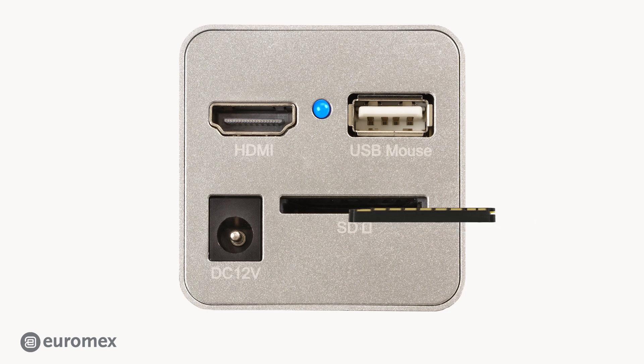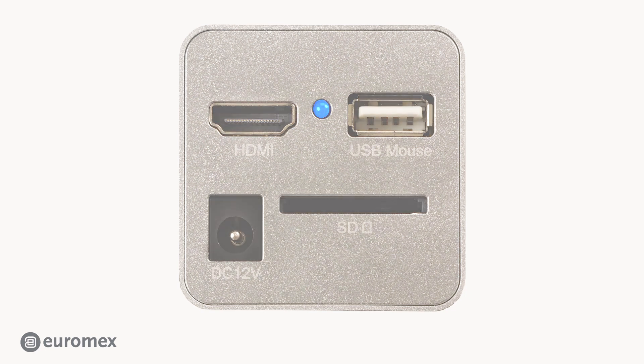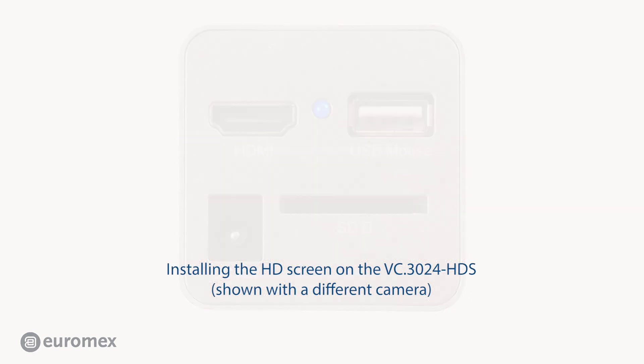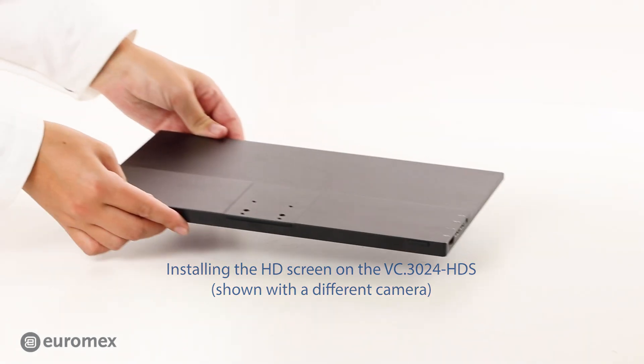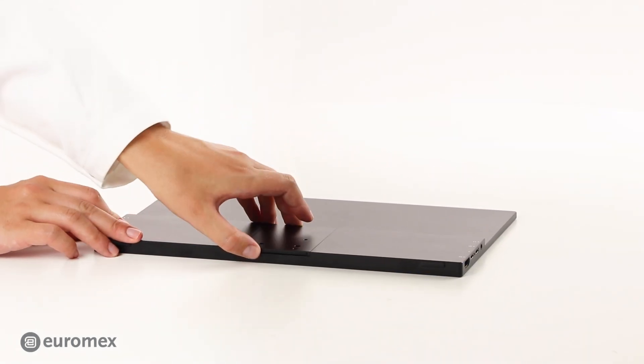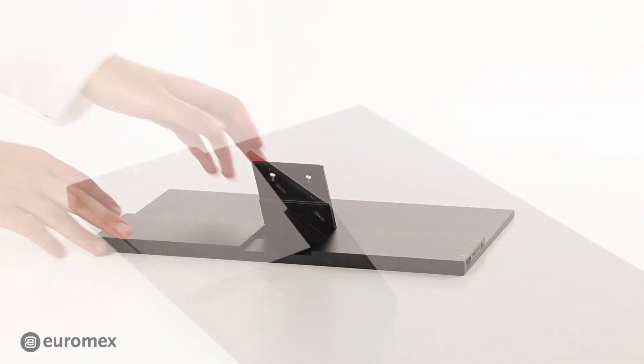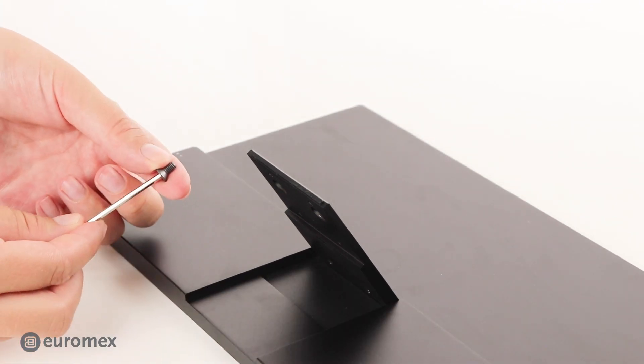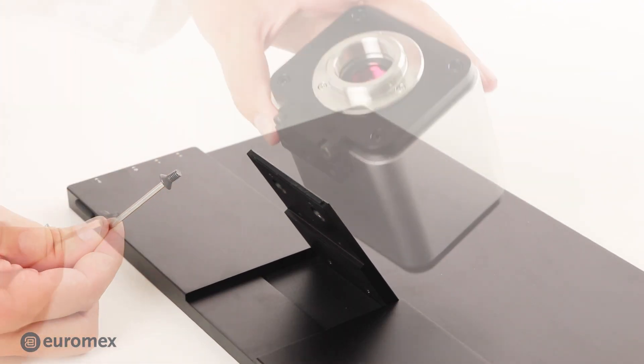Insert the SD card as indicated. Newer models are equipped with a USB flash drive instead of an SD card. Use the two Allen screws to attach the camera to the screen.